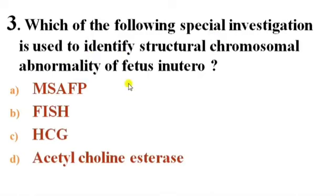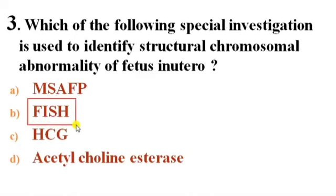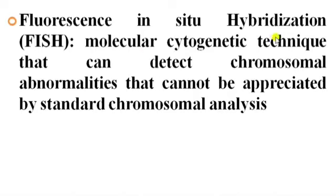Next question: Which of the following special investigations is used to identify structural chromosomal abnormality of the fetus in utero? Options: A) Maternal serum alpha-fetoprotein, B) FISH — Fluorescence In Situ Hybridization, C) HCG, D) Acetylcholinesterase. Answer is B — Fluorescence In Situ Hybridization. FISH is a molecular cytogenetic technique that can detect chromosomal abnormalities that cannot be detected by standard chromosomal analysis.